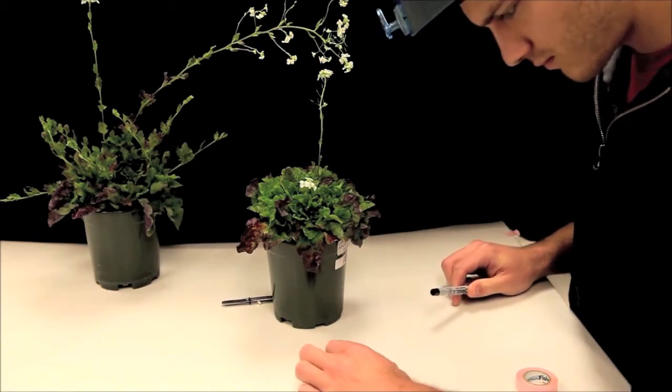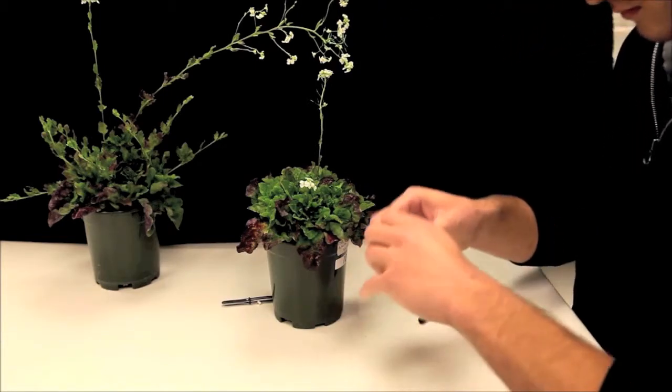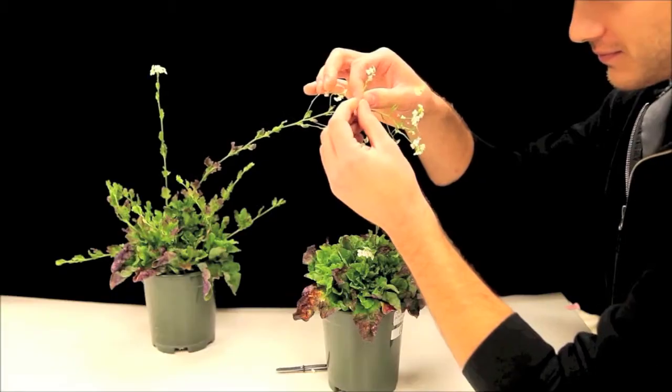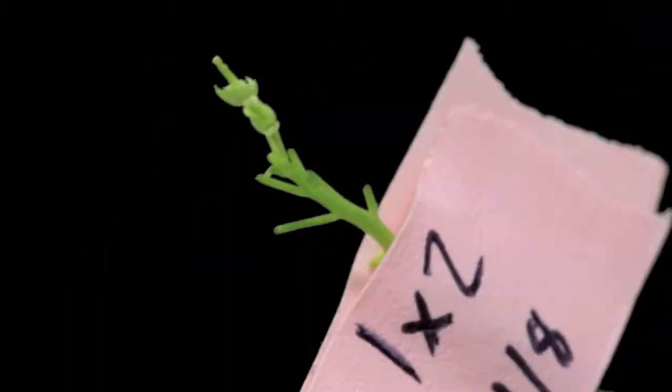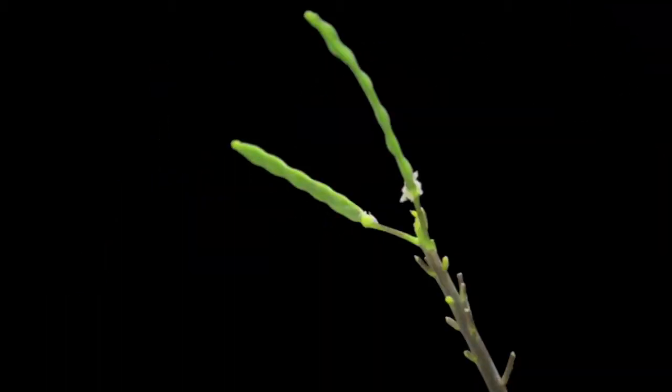Make sure to label your crosses by wrapping a small piece of tape around the flower you just pollinated. This will help you keep track when you come back several days later to confirm that your crosses worked by seeing the formation of selix.